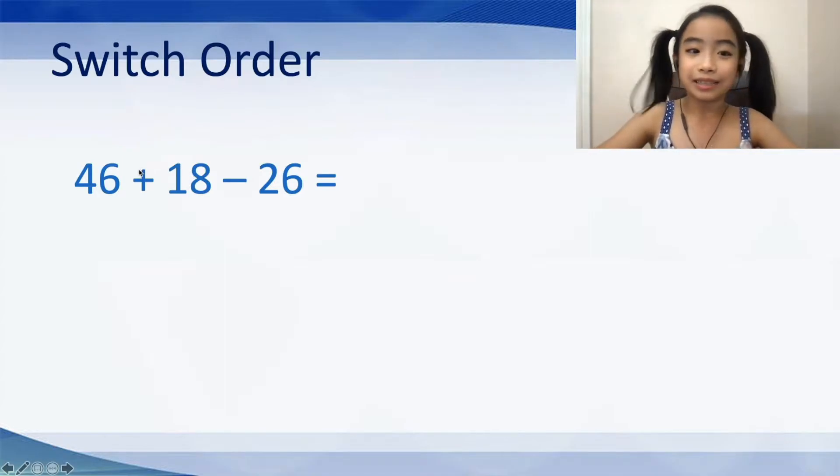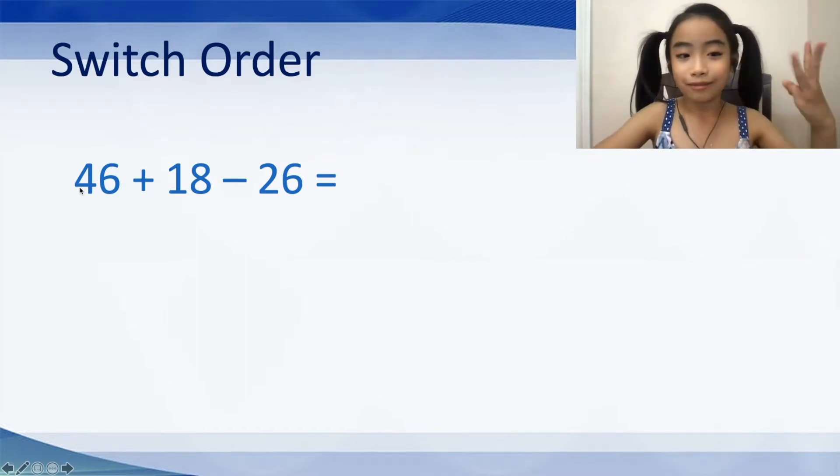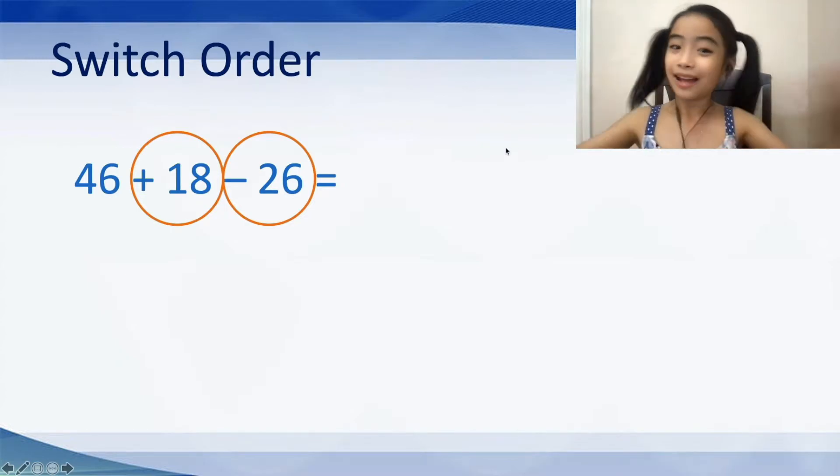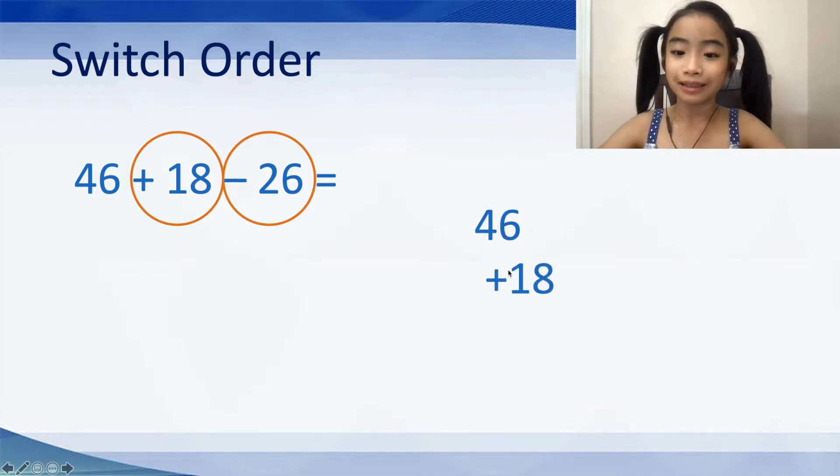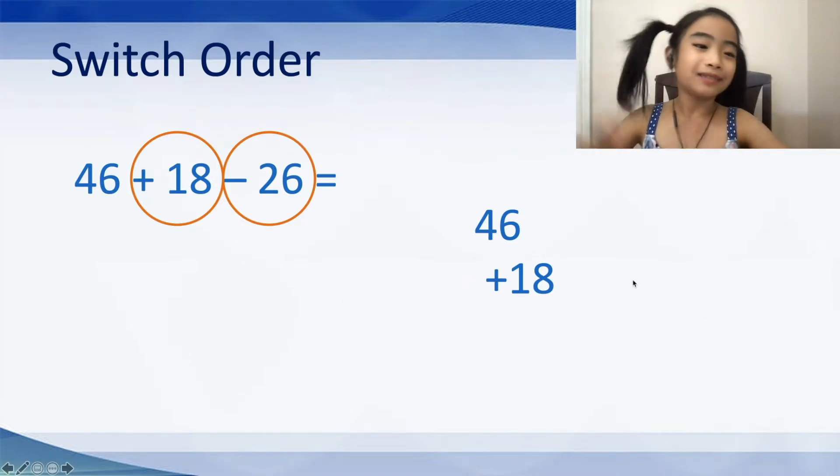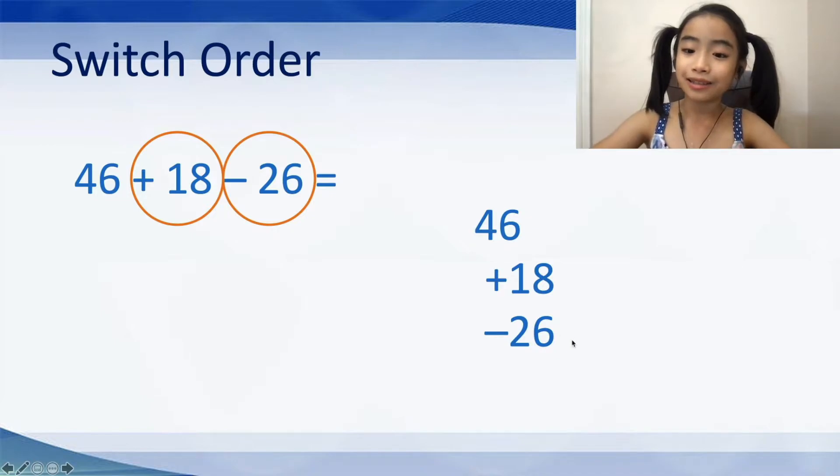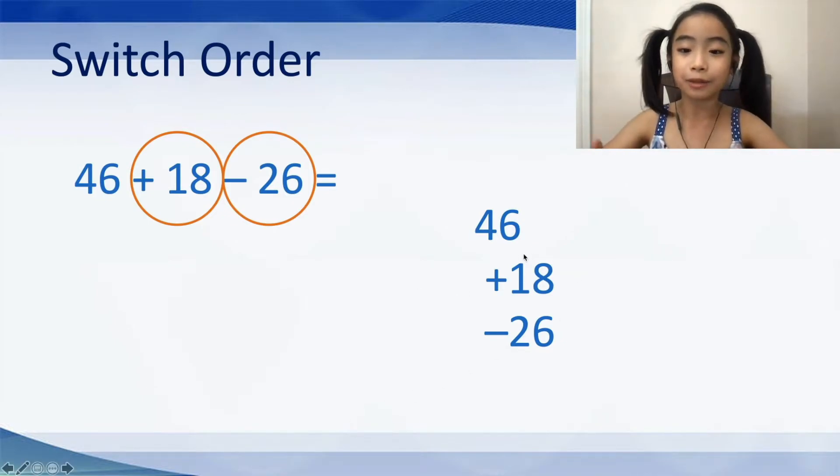So, right here, we can switch the order. So, how do we do that? Well, let's just imagine that there are 3 best friends. One best friend's name is called 46, one is plus 18, and the last best friend's name is called minus 26. So, one day, they went in line. So, 46 was first, then plus 18 was second. See how I'm putting the sign with the number that is behind it together? You have to do that or else switching order won't work. Now, we have minus 26, which is last.